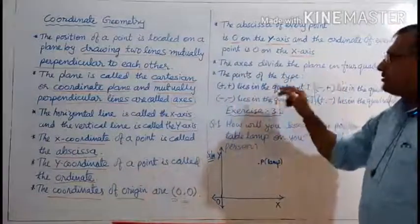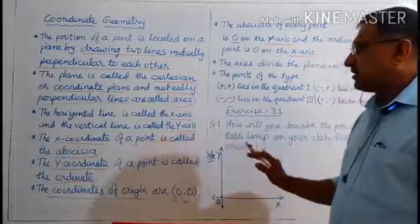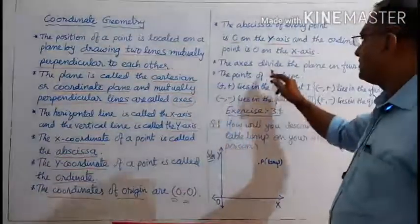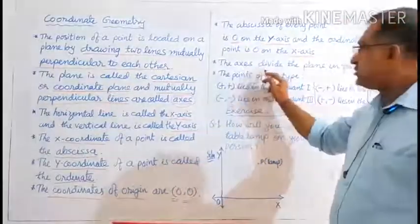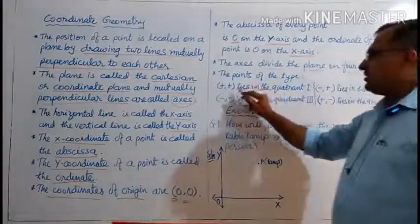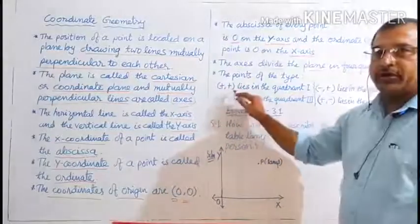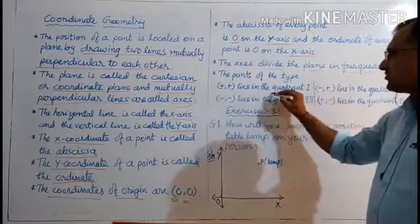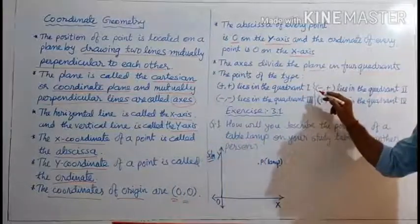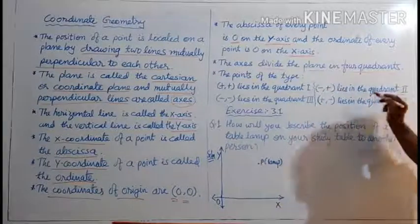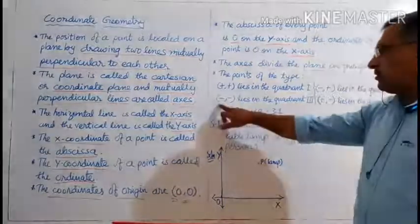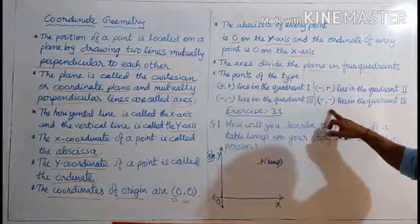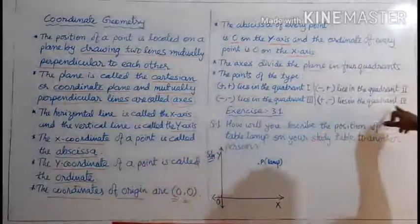The axes divide the plane into 4 quadrants. One horizontal line and one vertical line drawn mutually perpendicular divide the plane into 4 quadrants. If both the X coordinate and Y coordinate are positive, the point lies in the first quadrant. If X coordinate is negative and Y coordinate is positive, it lies in the second quadrant. If both are negative, it lies in the third quadrant. If X coordinate is positive and Y coordinate is negative, it lies in the fourth quadrant.